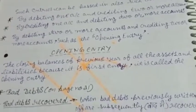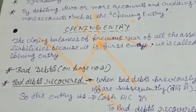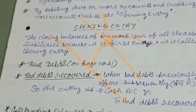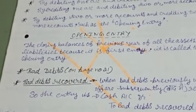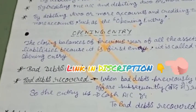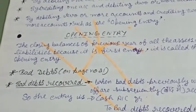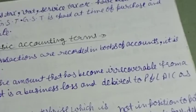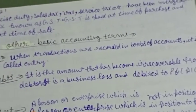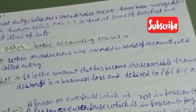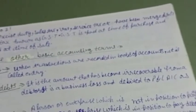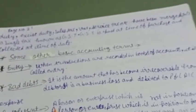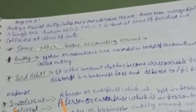Now we talk about bad debts. The closing balance of the previous year becomes the opening balance for the next year. Bad debts is the amount that has become irrecoverable from a debtor. It is a business loss and is debited to the Profit and Loss account, treated as an expense.